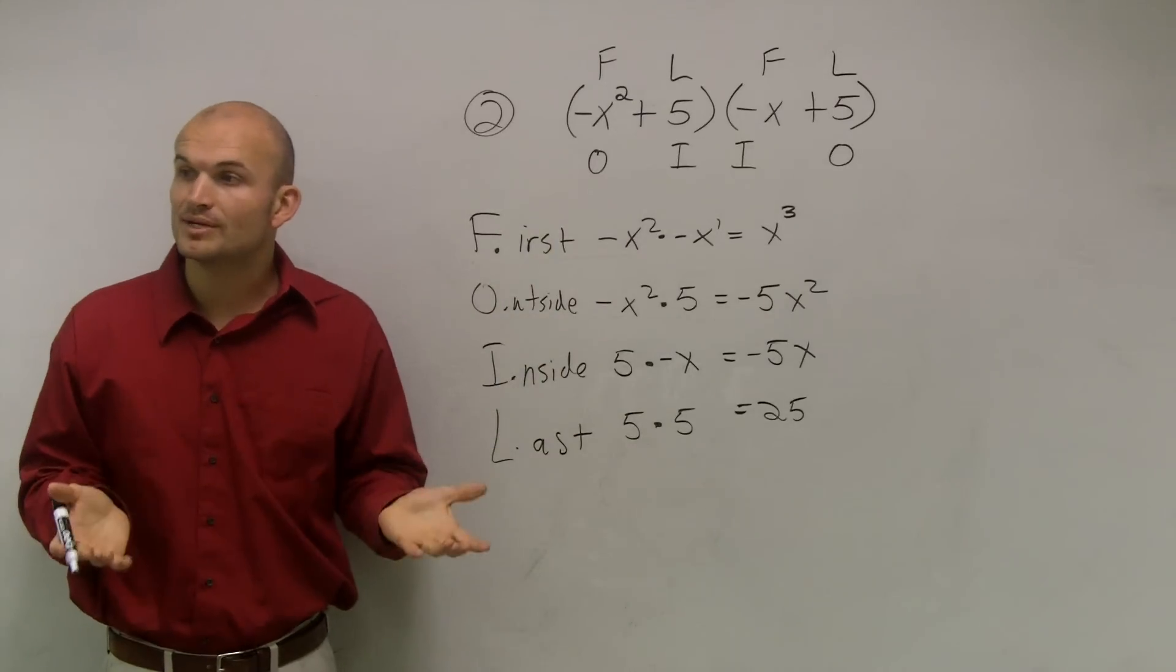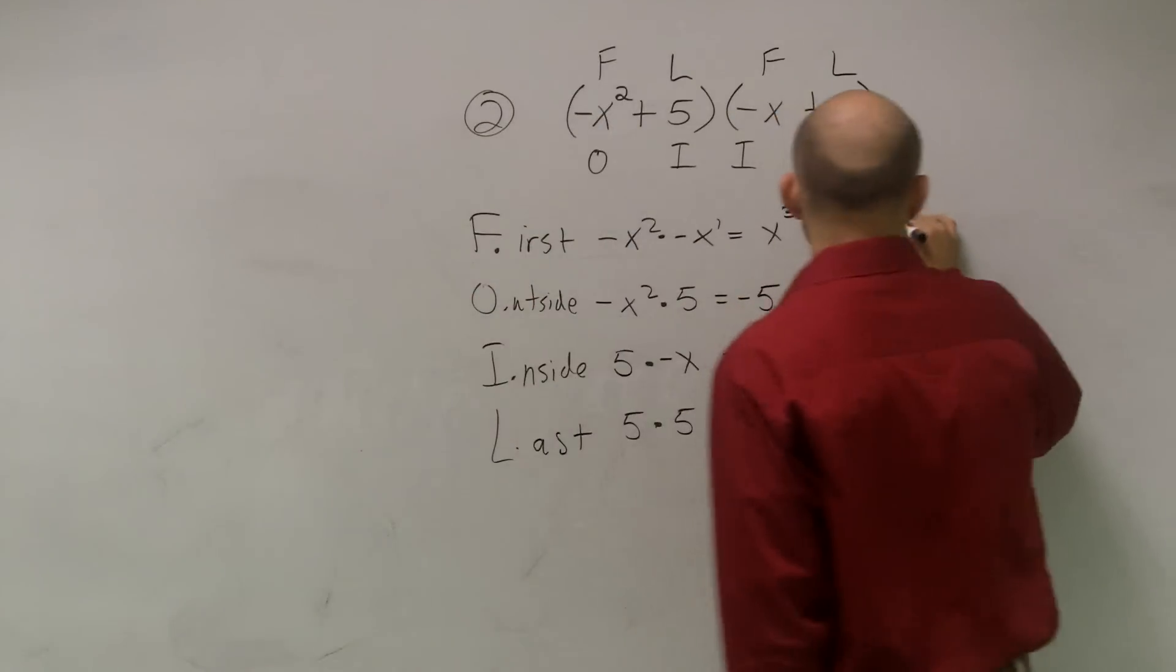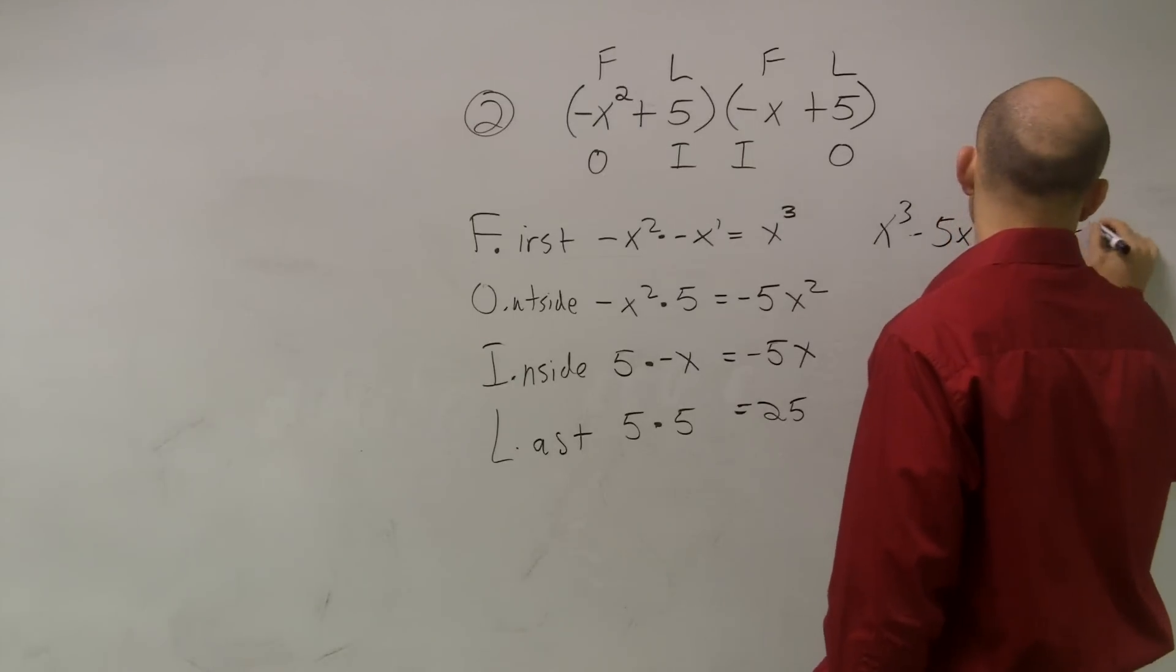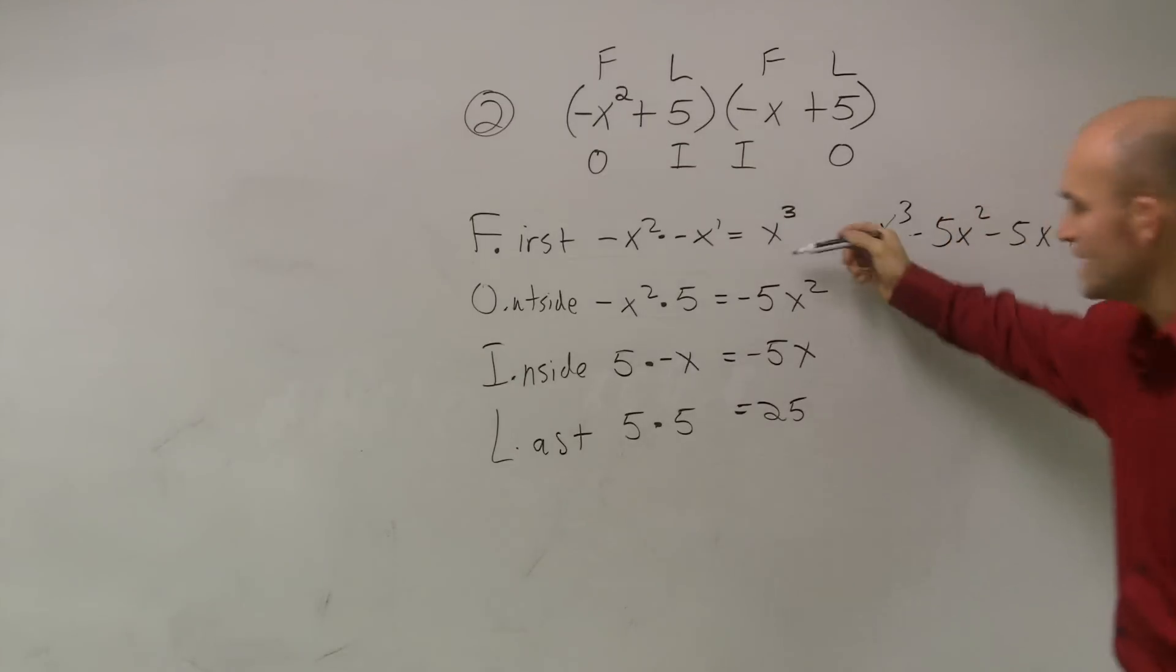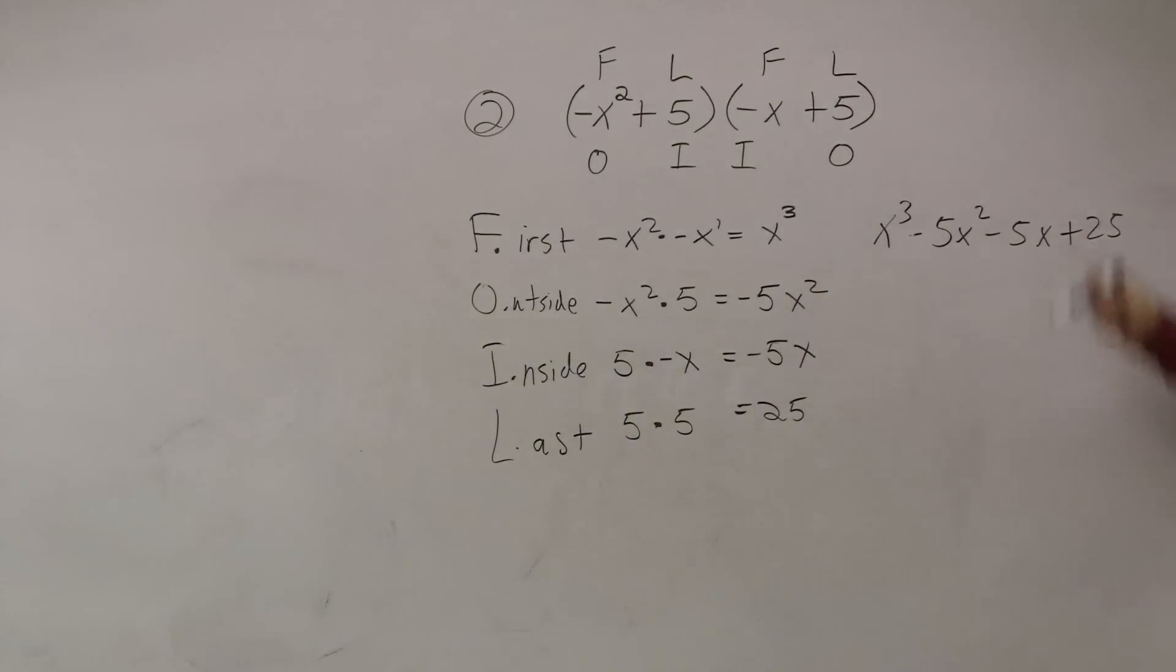So now, ladies and gentlemen, all we simply need to do is just write out each one of these answers. So I have x cubed minus 5 x squared minus 5 x plus 25. You take what your term is, and that's going to tell you if it's subtraction or addition. Then, do any of these have the same terms that I can combine? Nope. So I can't simplify any further. And you also notice how it's in descending order, right? Descending order of exponents. That's in standard form. So that's how you multiply using the FOIL method.